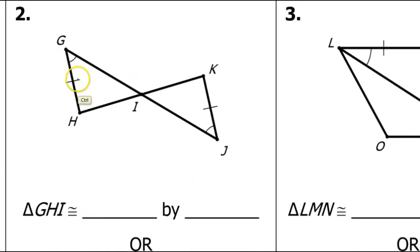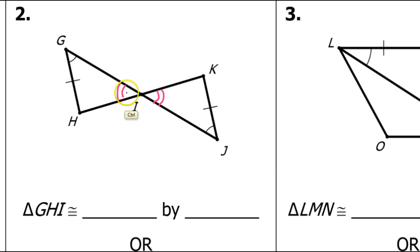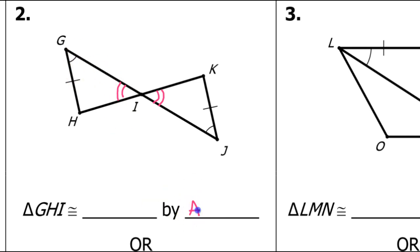In problem number two, in addition to what is already marked, we also know that these vertical angles are always going to be congruent. So I see that I have two angles and a side. I'm also noticing that the side is not between the angles. So I'm going to write down two angles and a side, but I'm going to make sure that I don't put the side in between the angles. So this is angle-angle-side, not angle-side-angle.